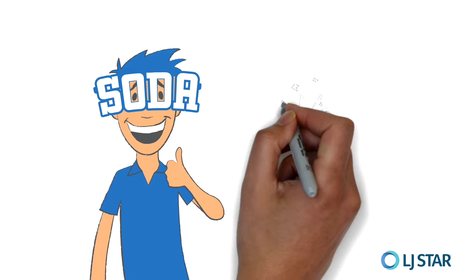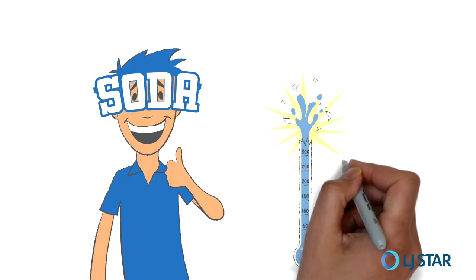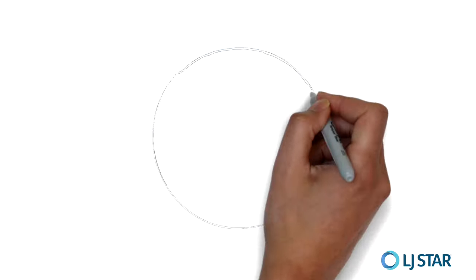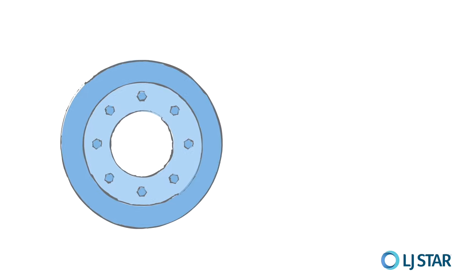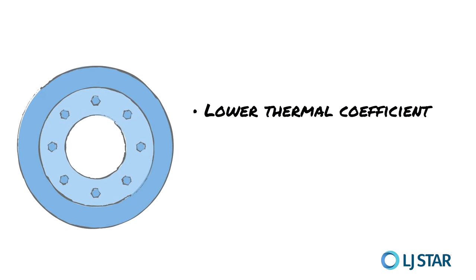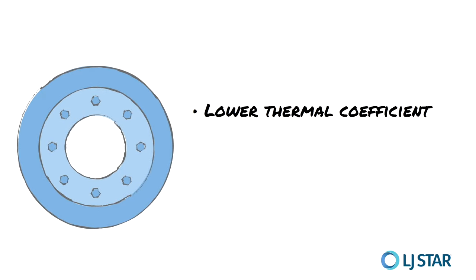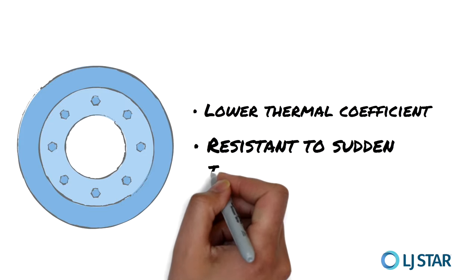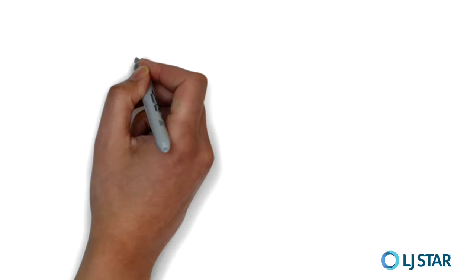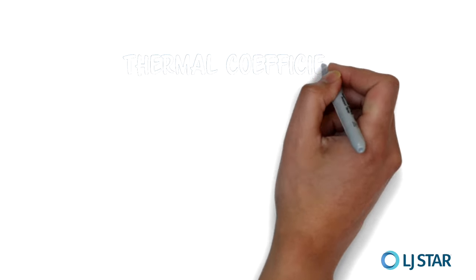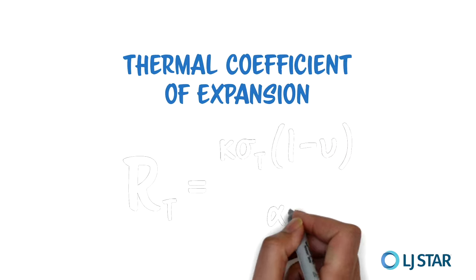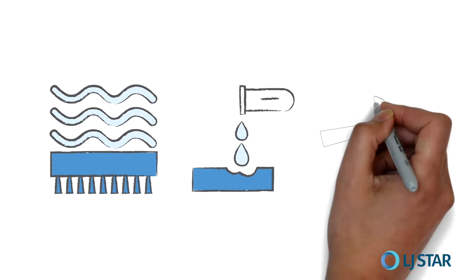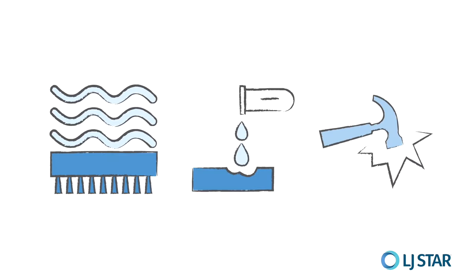Next, consider whether your application will subject the sight glass to thermal shock, like we saw in that Consumer Reports video. If so, genuine borosilicate glass should be specced. That's because borosilicate glass has a considerably lower thermal coefficient of expansion than soda lime glass, making it more resistant to sudden temperature changes. There's real science behind this — there's even a formula for it — and I'll show you where you can look this up later.